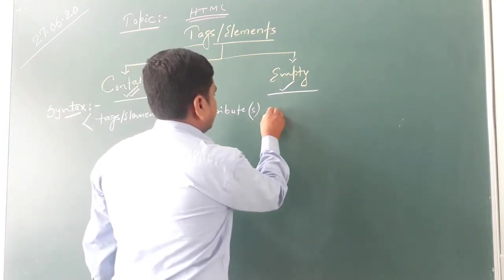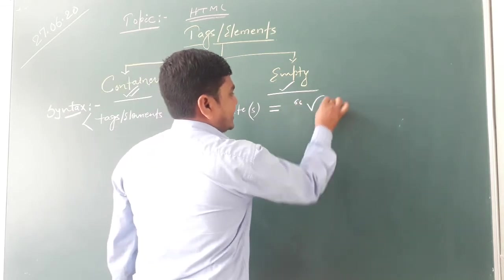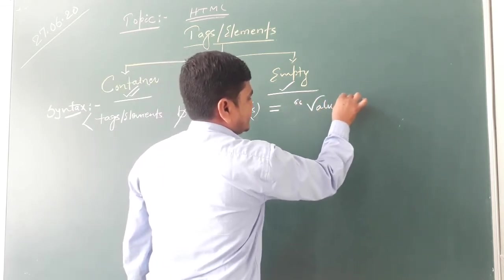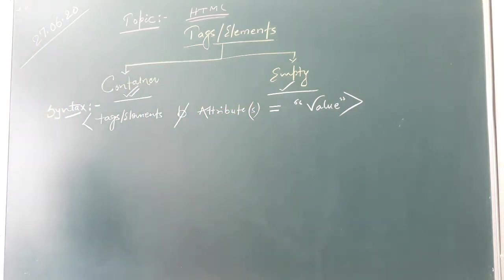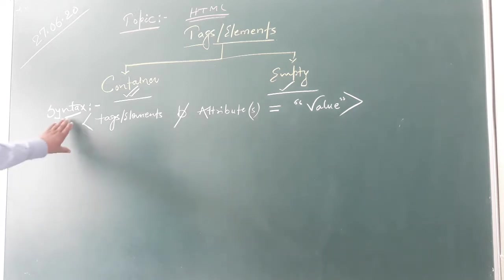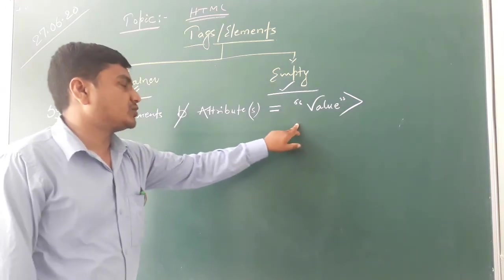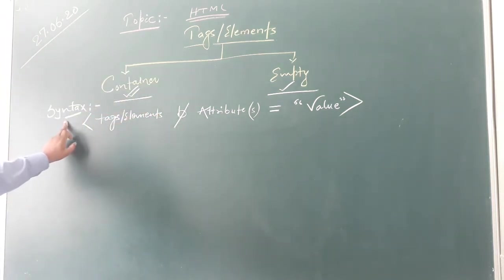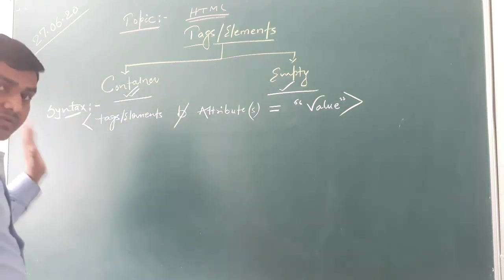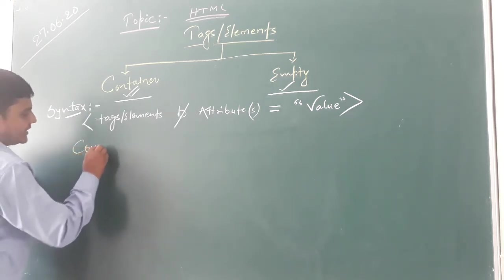After this we will use values — equal to sign — a special kind of symbol, and then after we will write the value quoted into double quotation. This syntax applies for both: for empty as well as for container tags.